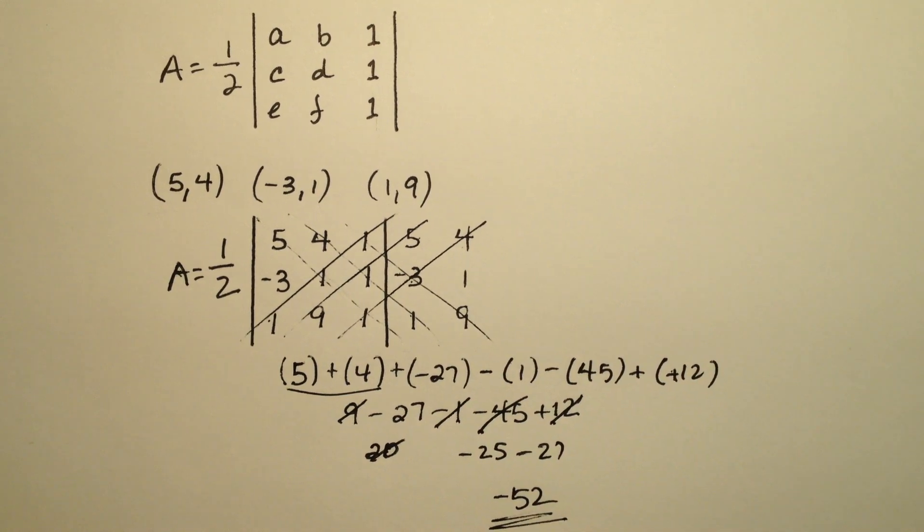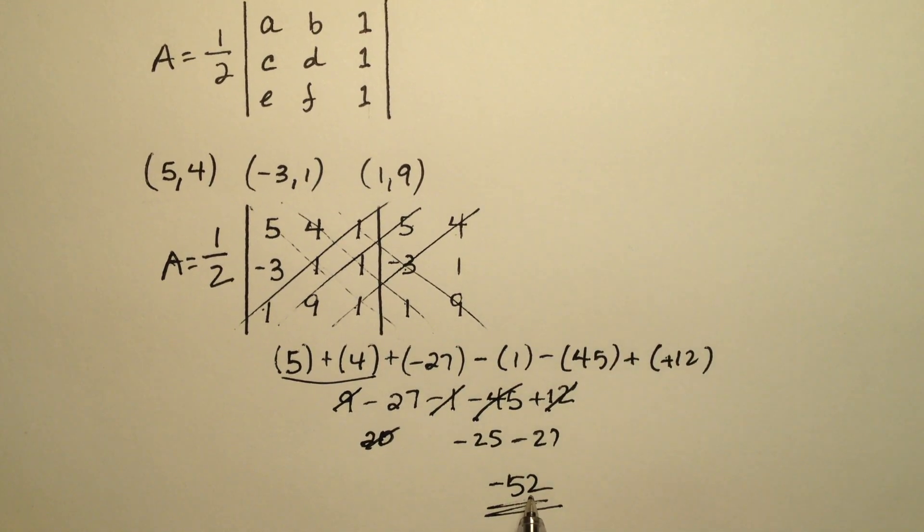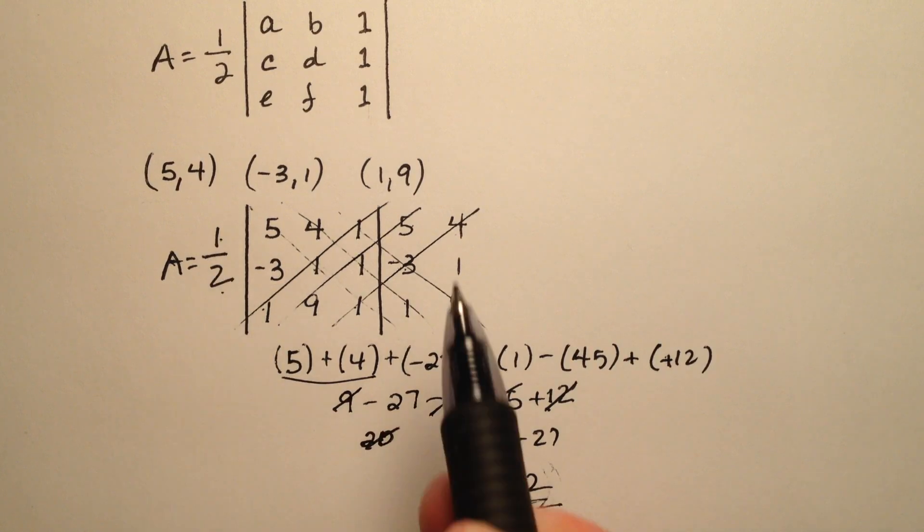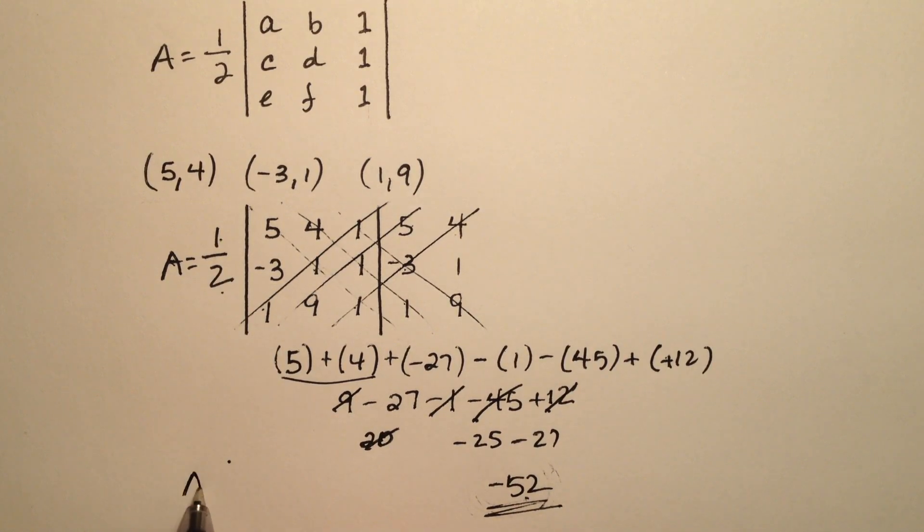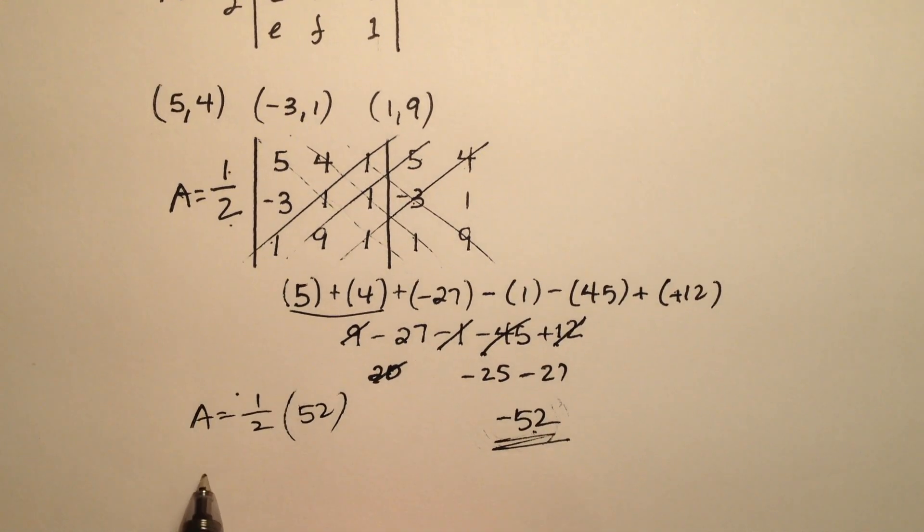So here's an example of when your determinant comes out to be a negative. So what this means, recall, we're going to find the absolute value of this determinant. So I'm going to take a positive 52, and I'm going to take half of that. So the area is going to equal half of positive 52. So when I do that, the area will equal 26 square units.